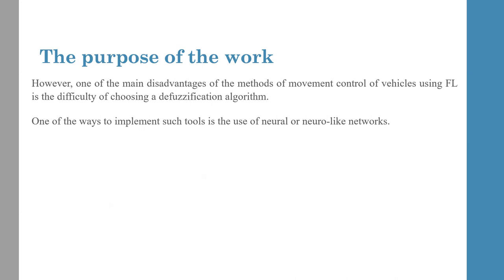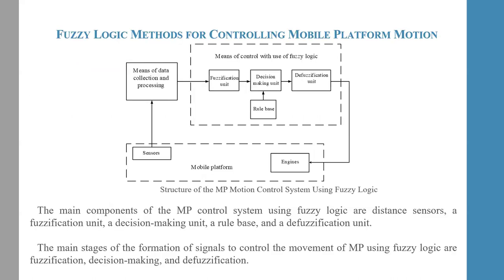One of the ways to implement such tools is the use of neural or neural-like networks. The main components of the Mobile Platform Control System using fuzzy logic are distance sensors, a fuzzification unit, a decision-making unit, a relay base, and the defuzzification unit. The main stages of formation of the signal to control movement are fuzzification, decision-making, and defuzzification.